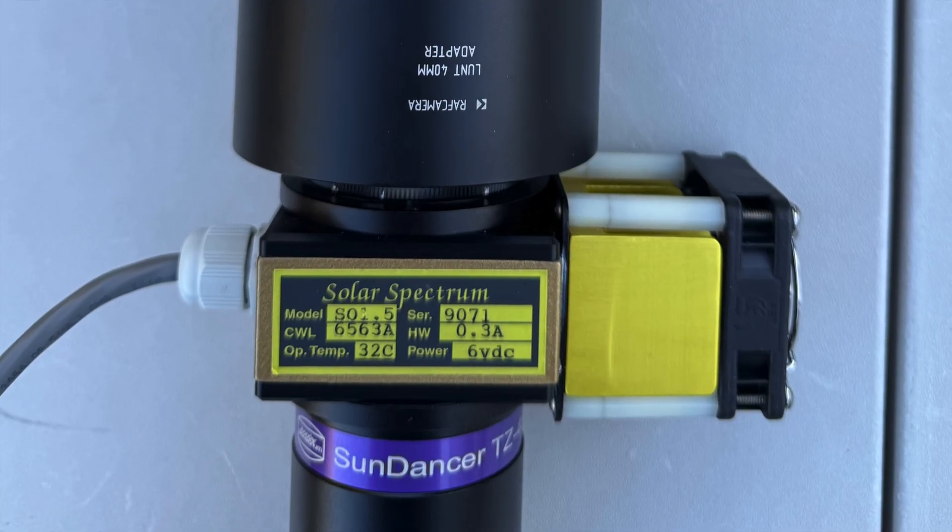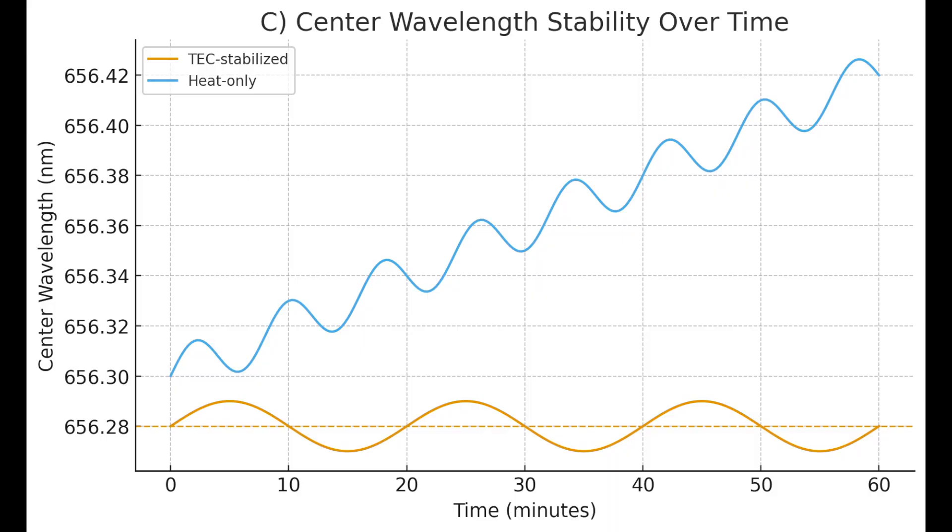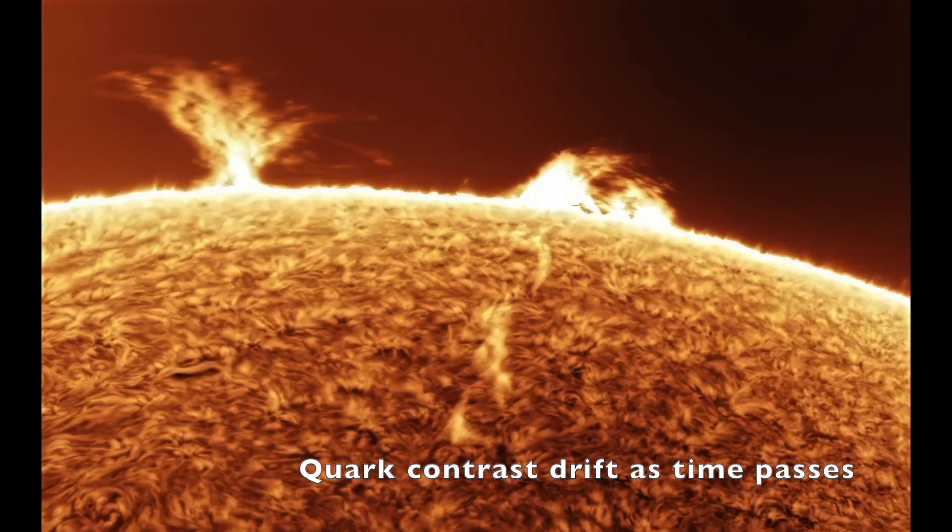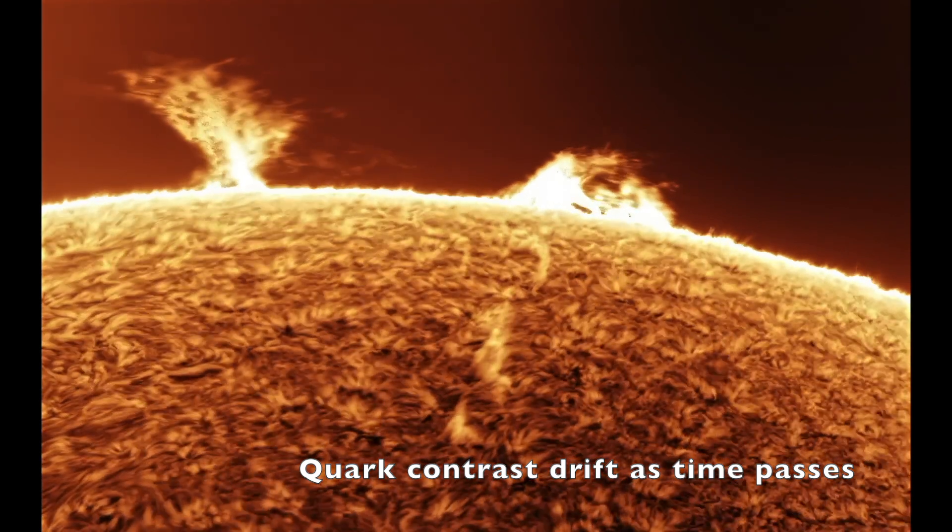In this illustration, notice how the TEC stabilizes the wavelength almost perfectly, whereas heat-only systems can show cyclic drift over time, especially as a telescope heats up. This explains why the Quark time lapses can slowly lose contrast unless frequently checked and adjusted.